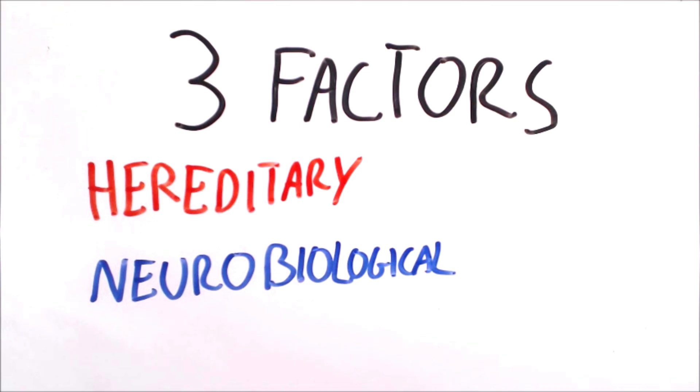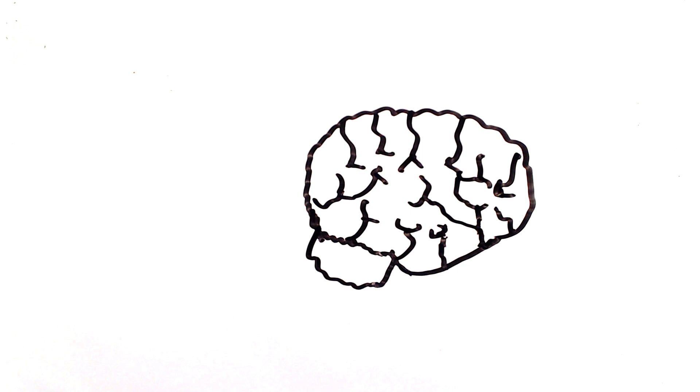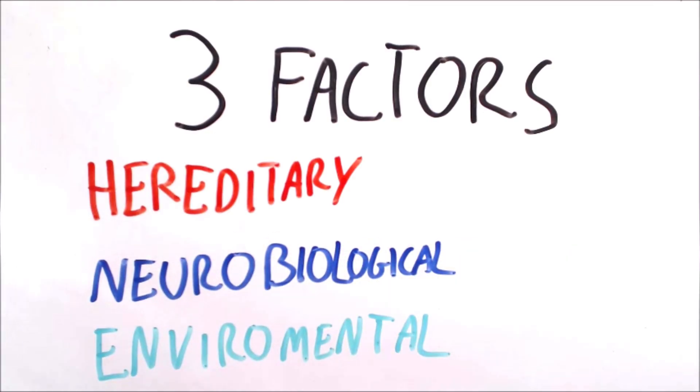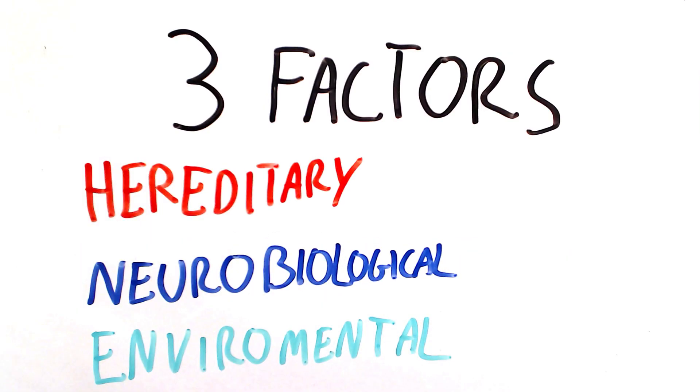It is largely believed that an impairment in the brain's neurotransmitter systems, in particular dopamine and noradrenaline, are associated with developing ADHD. Lastly, environmental factors may also contribute to developing the disorder.